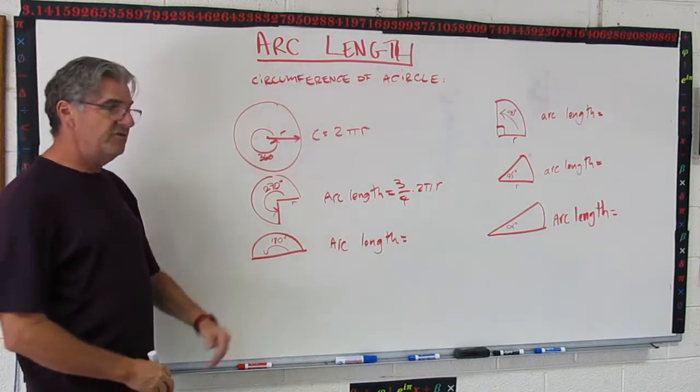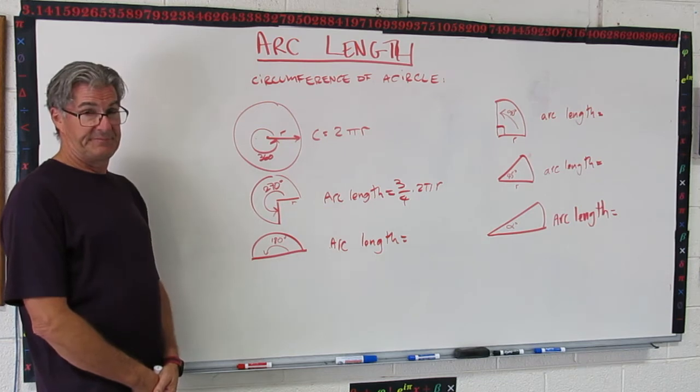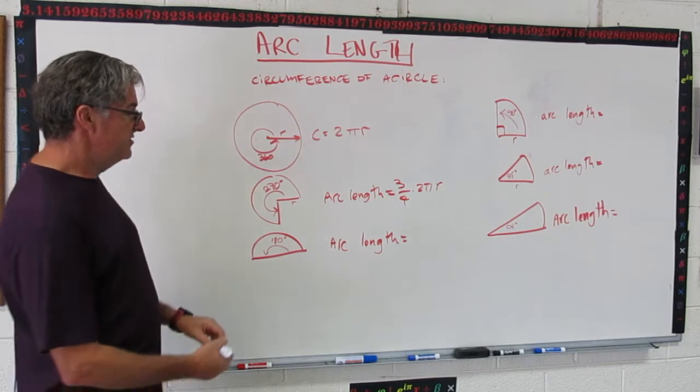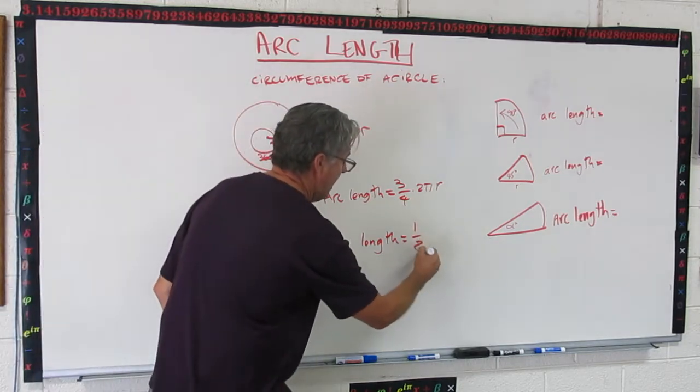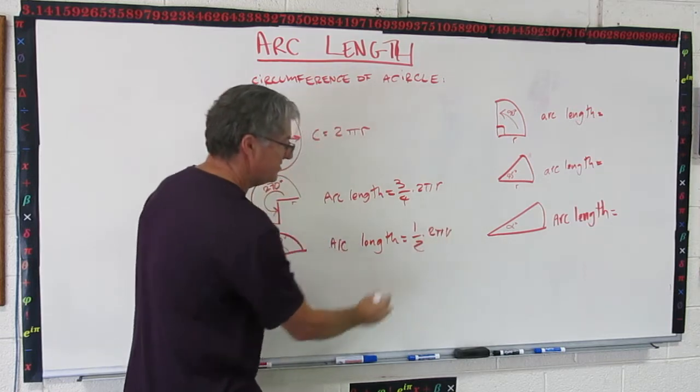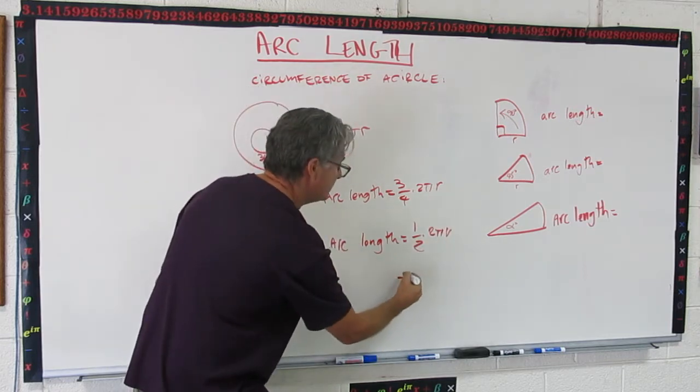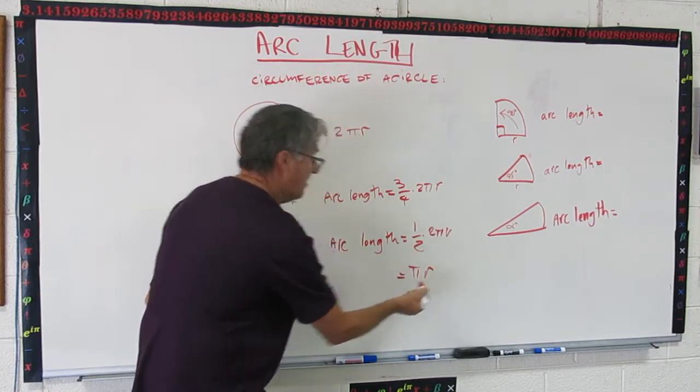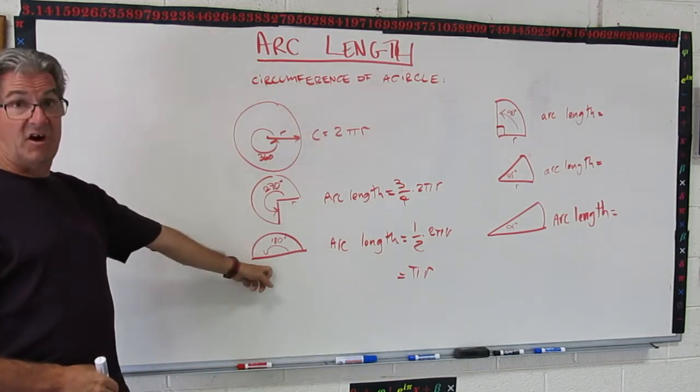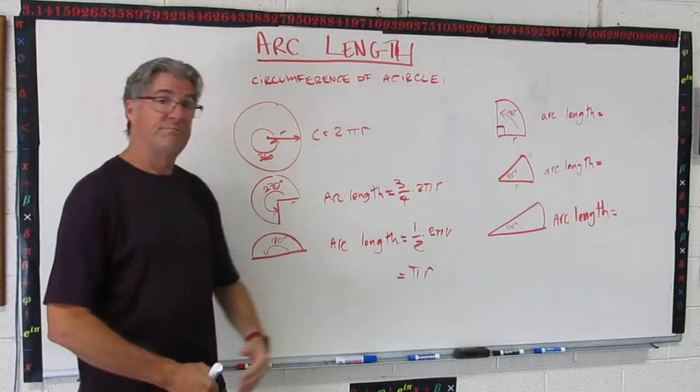Now pause the video and see if you can do that one. So 180 is half of 360. So the arc length here is going to be 1/2 times 2πr. And let's cancel those twos out. So this one is just going to be πr. And that kind of makes sense. If the full circumference is 2πr, then the half circumference arc should be πr.